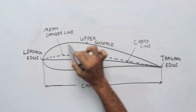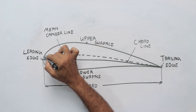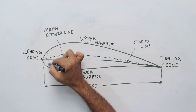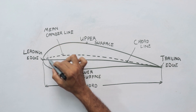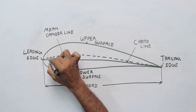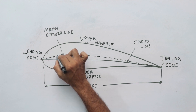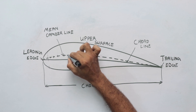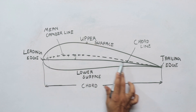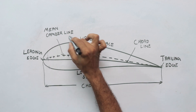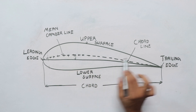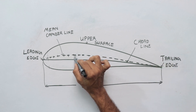This mean camber line is made by the upper surface and lower surface. We divide vertically and mark the correct midpoints along those vertical lines. We connect those points to form the mean camber line.